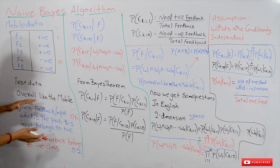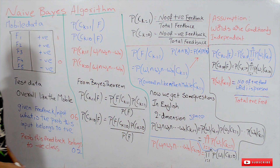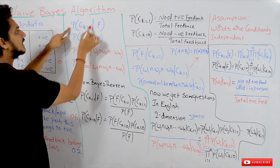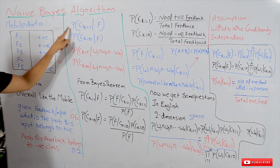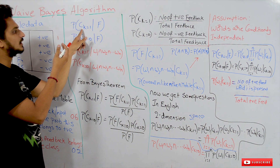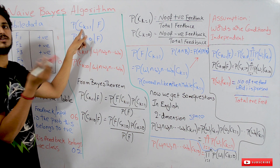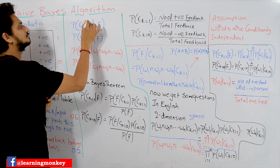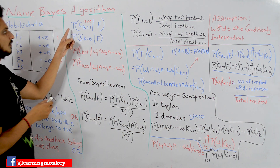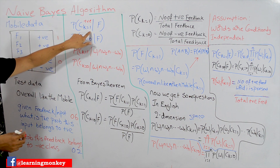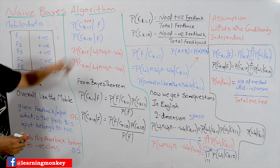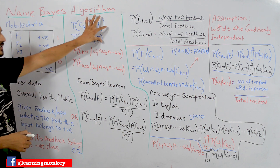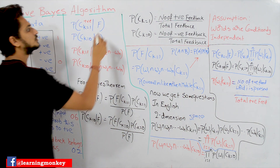These are the general terms. Now let's convert them into mathematical equations. What Naive Bayes does is compute: the probability of belonging to positive class given feedback, written as P(CK=1 | F). Positive is considered as 1, so class K equals 1. These general terms are written in conditional probability. We also compute P(CK=0 | F). These two probabilities are what we have to identify.